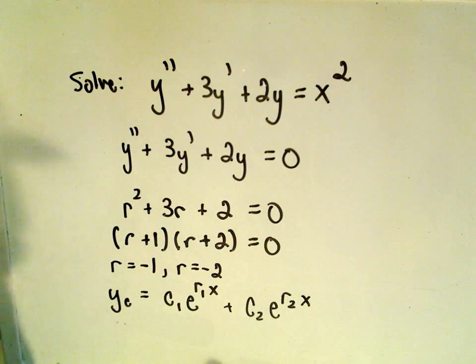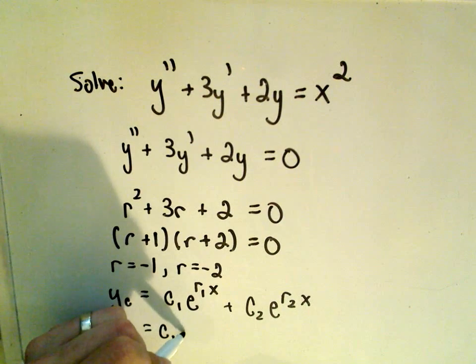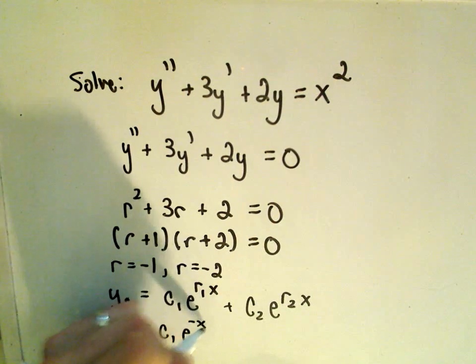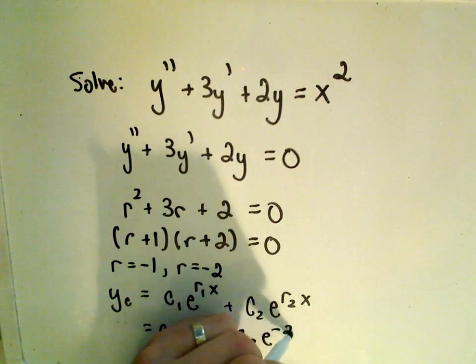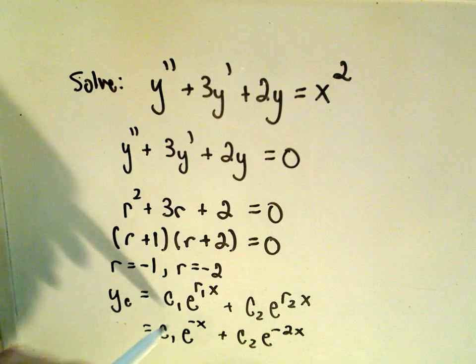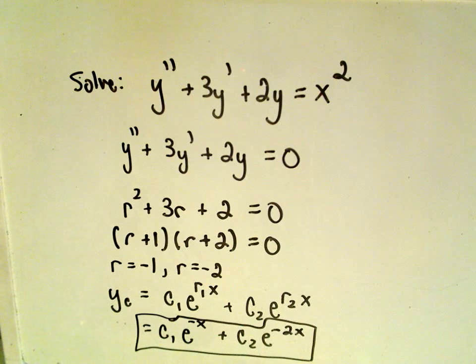Well we know our roots here, all we have to do is plug those in. So our general solution is going to be c1, e to the negative x, plus c2, e to the negative 2x. Okay, so this is going to be incorporated into part of our solution at the end.